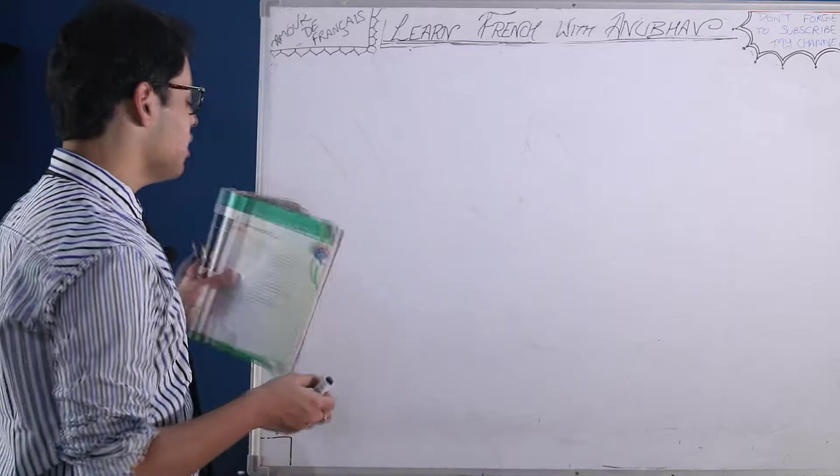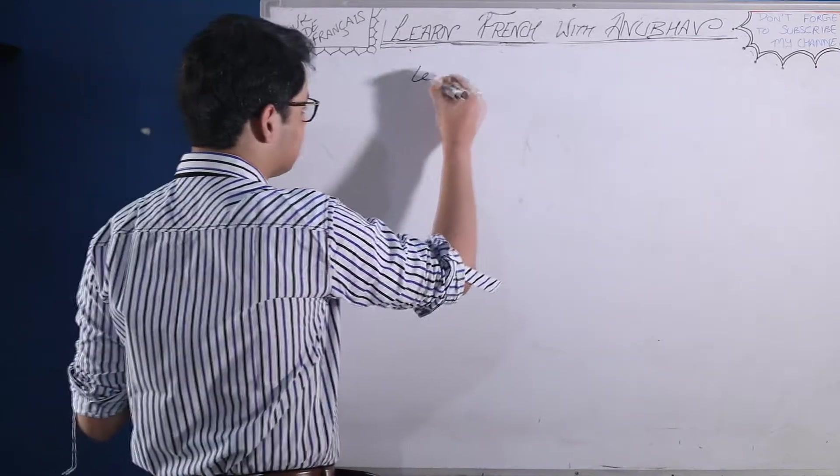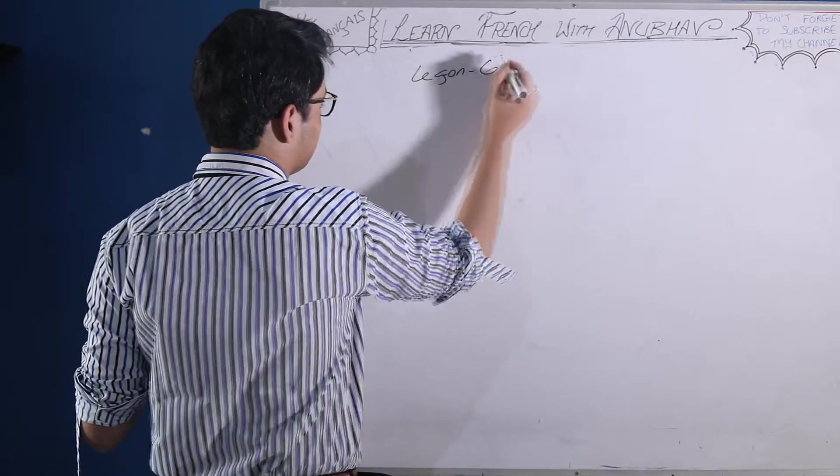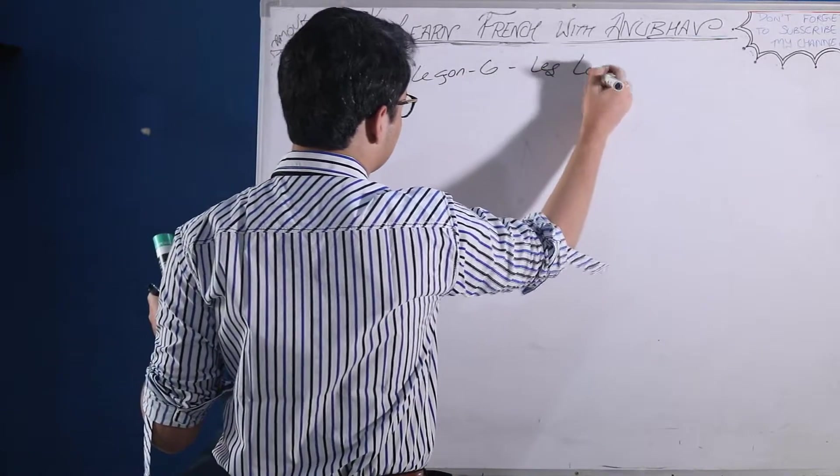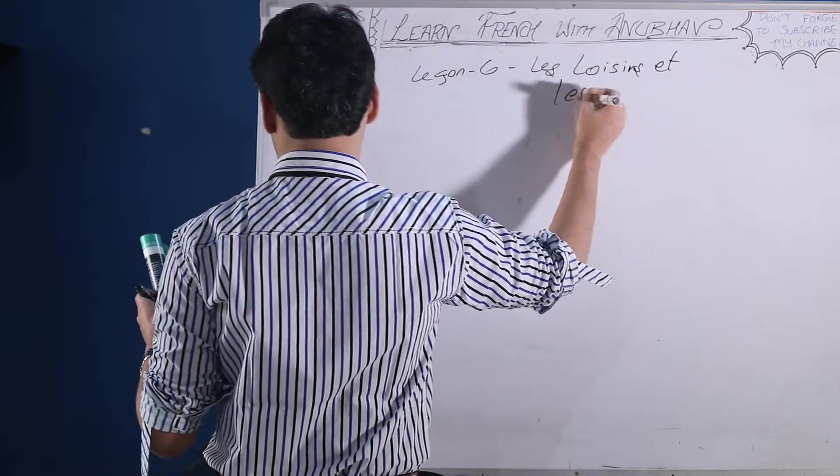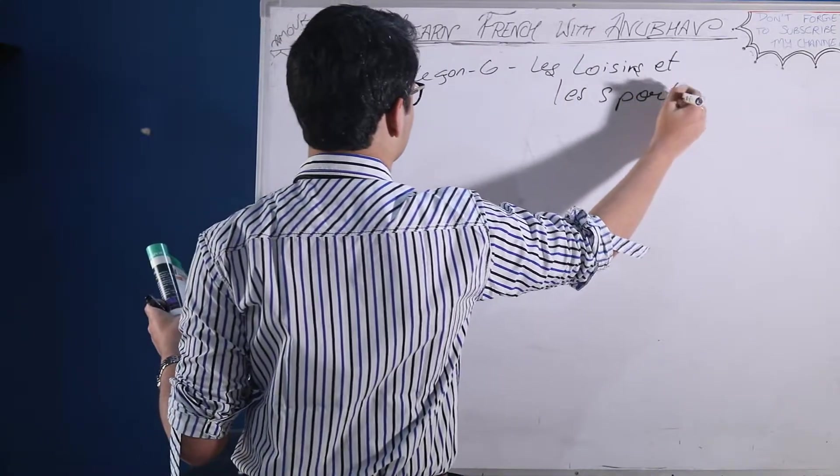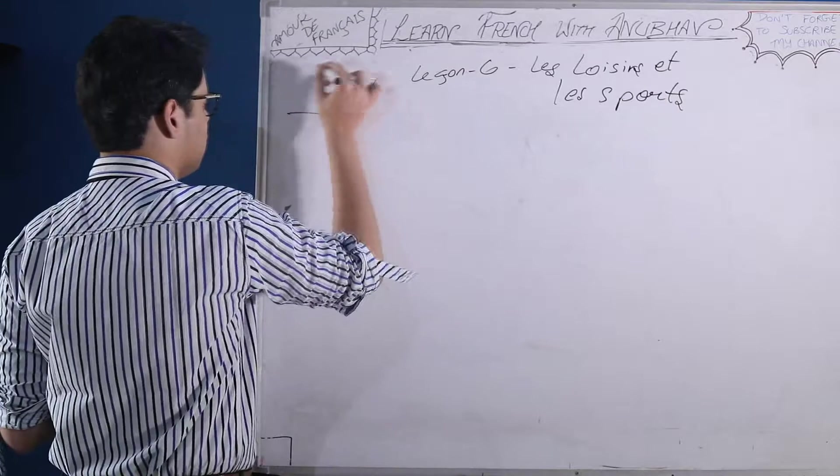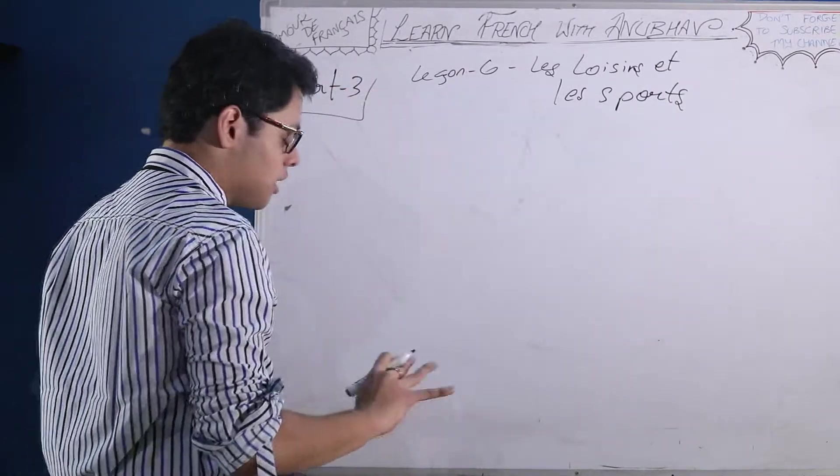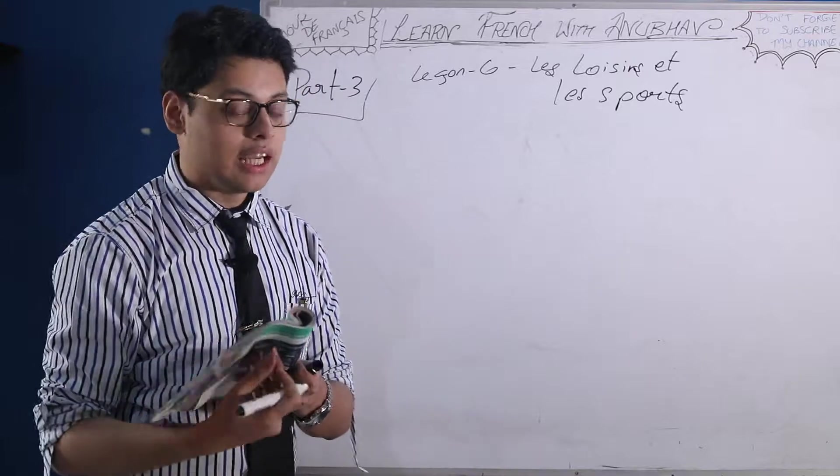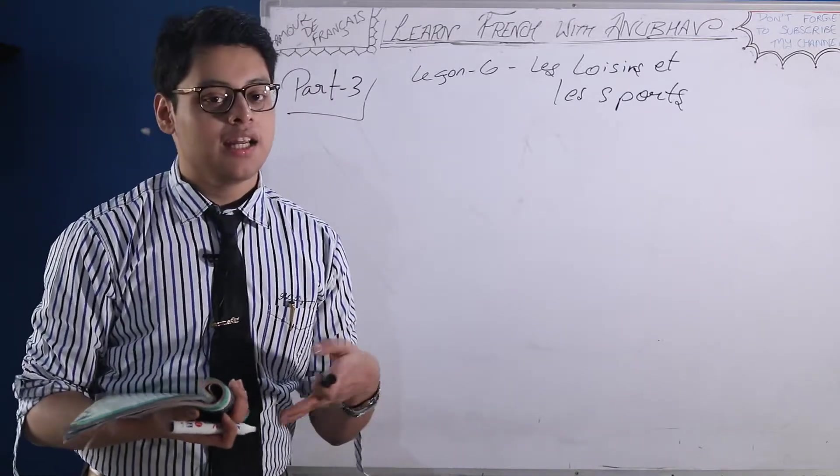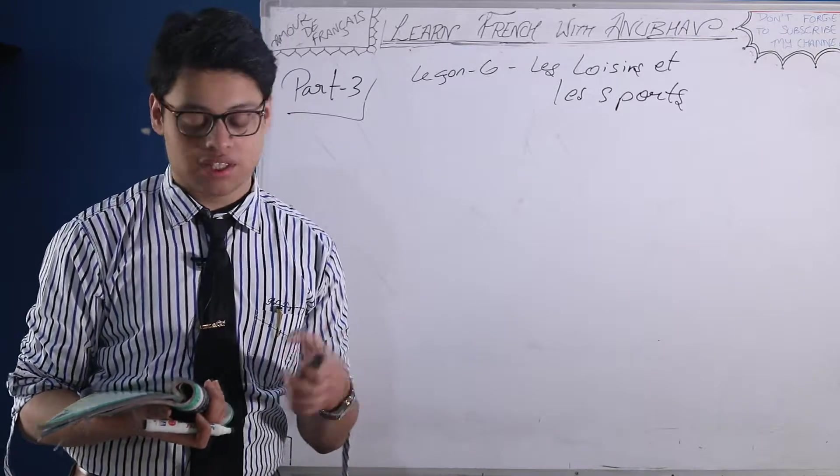Today's class, we are continuing with lesson number six, les loisirs et les sports, part three. Part one, part two, and all of the videos of Ontition class 9 are present in the playlist titled the same Ontition class 9. The link is in the description. You can watch it if you have not.